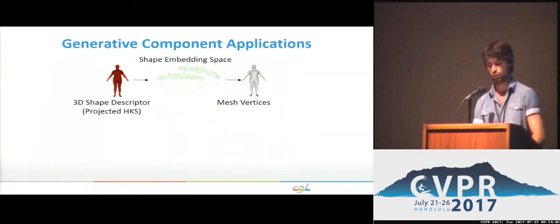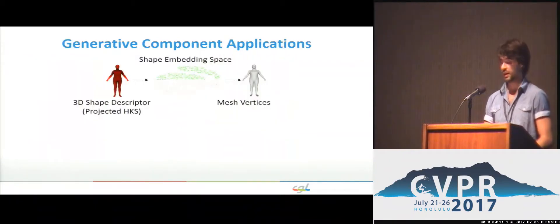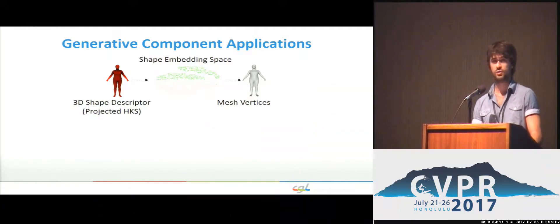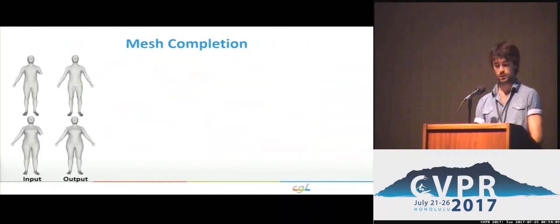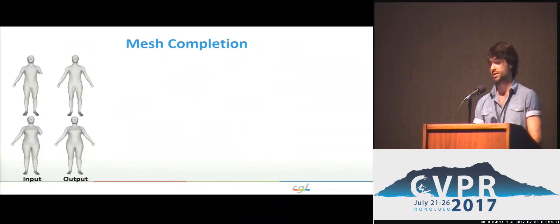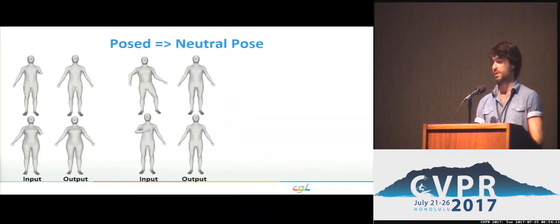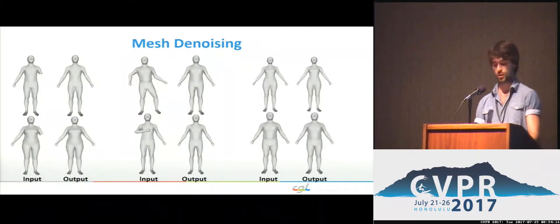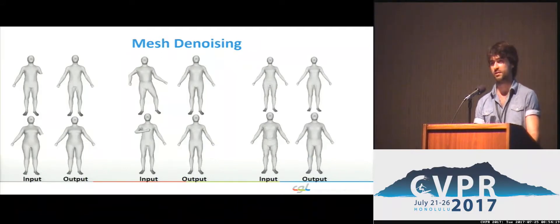And lastly, we show potential applications of the generative part of our network when a shape descriptor is extracted from some mesh. It can be used to reconstruct partial meshes, invert the pose of a mesh into a neutral one, or even denoise a noisy mesh. For more info, please visit our poster number 17. Thank you.